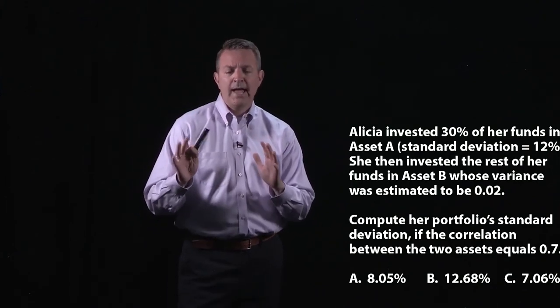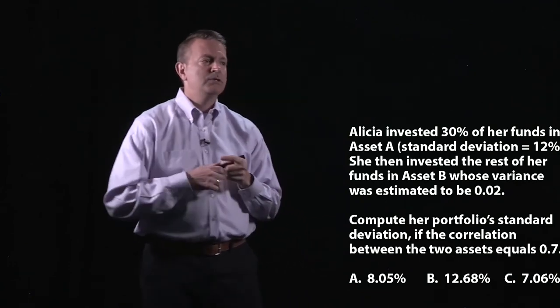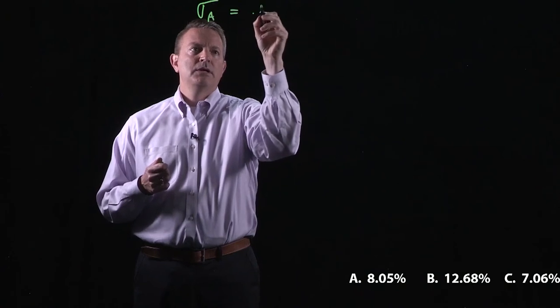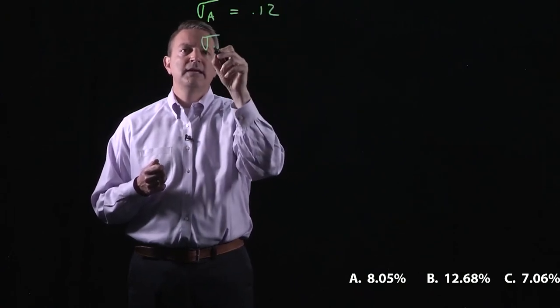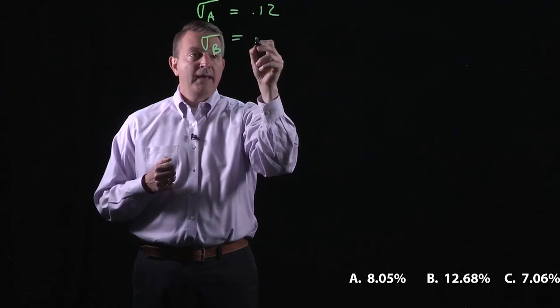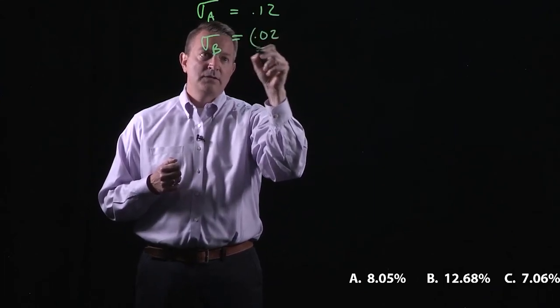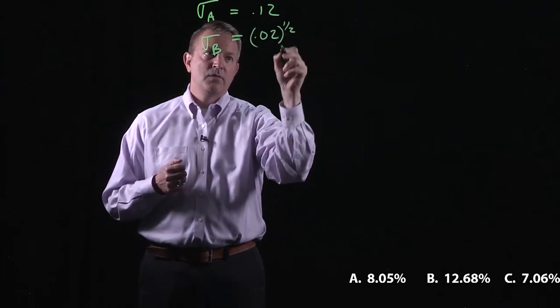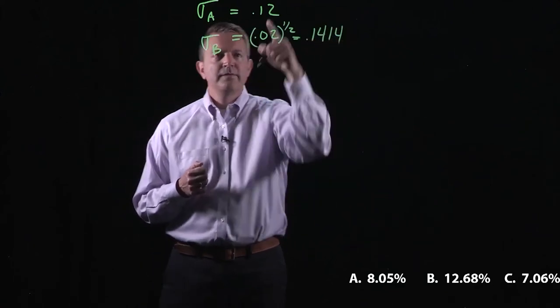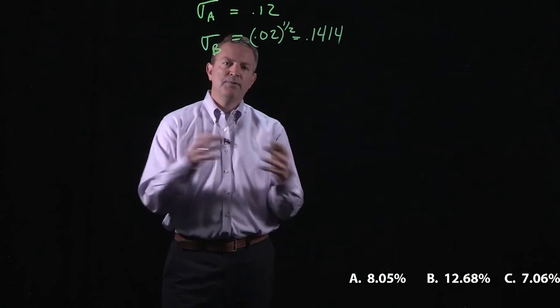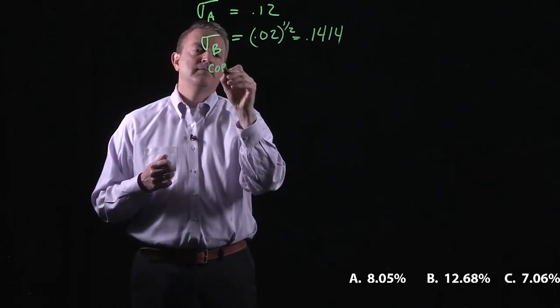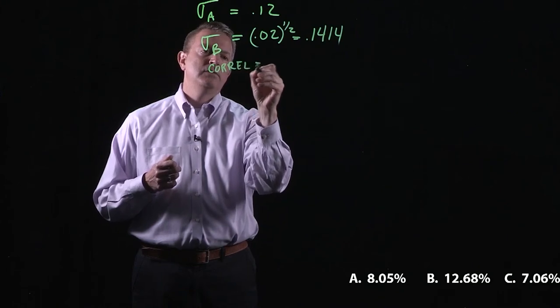Now, one thing I wanted to ask you before you get started on this question is, you've got a standard deviation of asset A, which is 0.12. You've got a standard deviation of asset B, and that is, remember we said that squared term? We're going to have to take the square root of that, and that turns out to be 0.1414. So we've got two standard deviations, and we're going to put these together. The correlation is 0.7. That's a pretty high number.